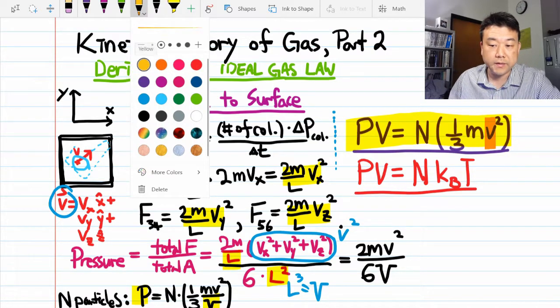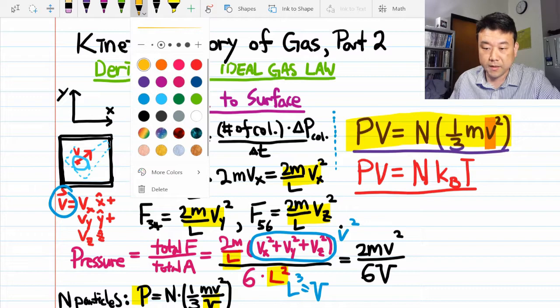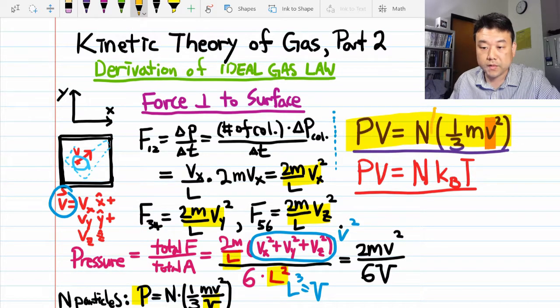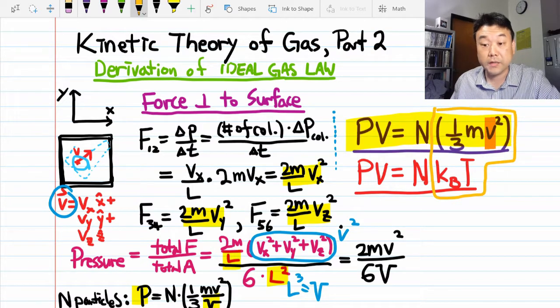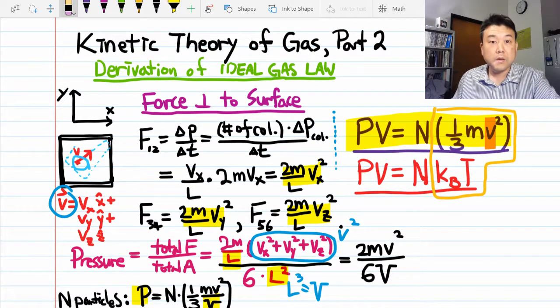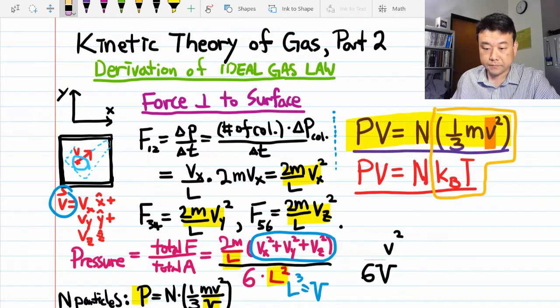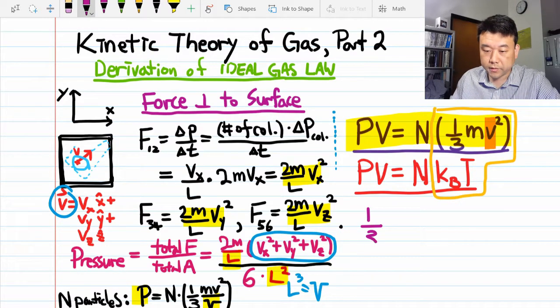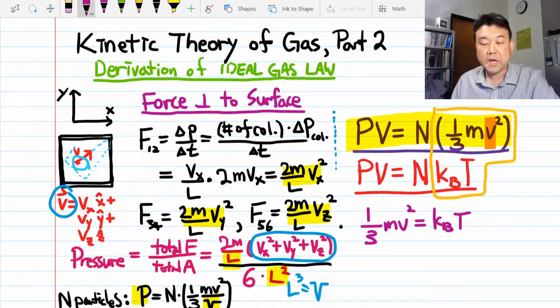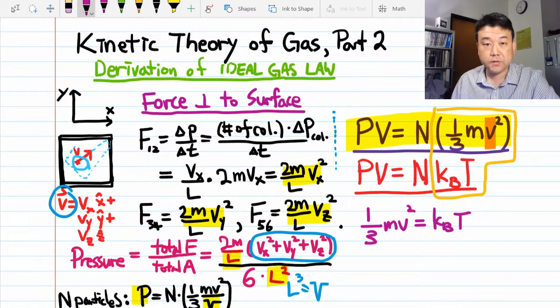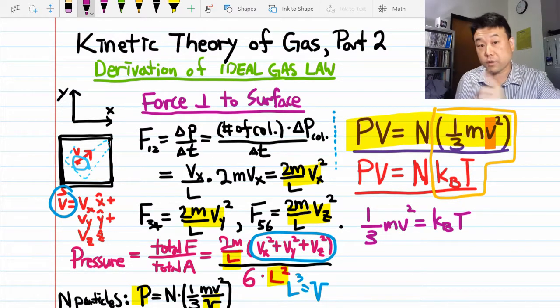Now, comparing these quantities, we notice something: that if both of these are correct, then these terms that I'm putting in a box must be equal to each other. In other words, one-third mv squared is equal to Boltzmann constant times the temperature.